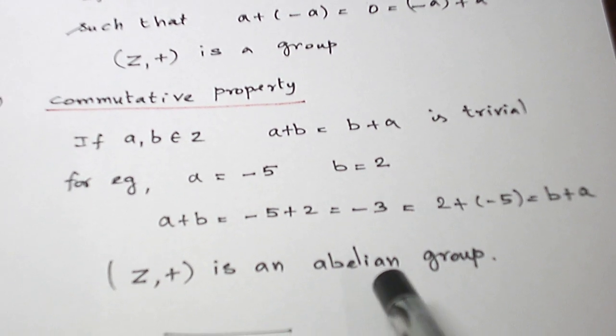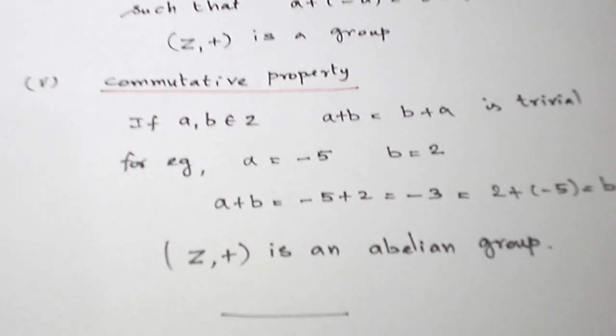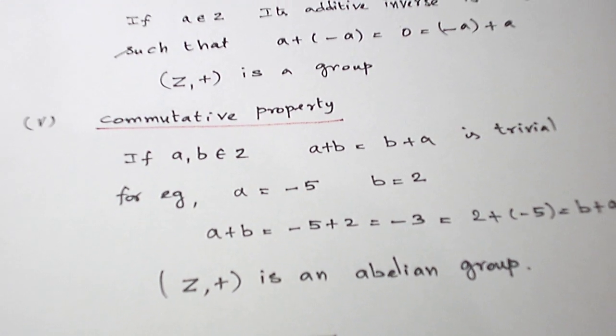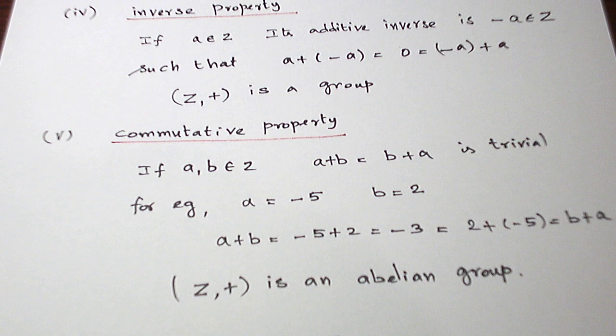So (Z, +) is an abelian group. With this, this problem is over. Let us see another problem in the next video. Thank you.